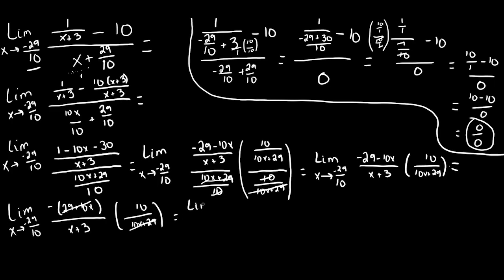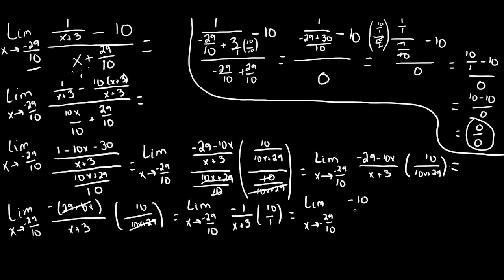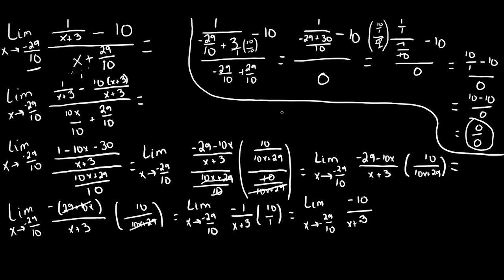After canceling, what we have left is the limit as x approaches negative 29 over 10 of negative 1 over x plus 3, times 10 over 1. Let's go ahead and do that multiplication, giving us negative 10 over x plus 3. At this point, what we're going to do is plug our c value back in for x, like we did at the start, and see if we can find a definite answer.